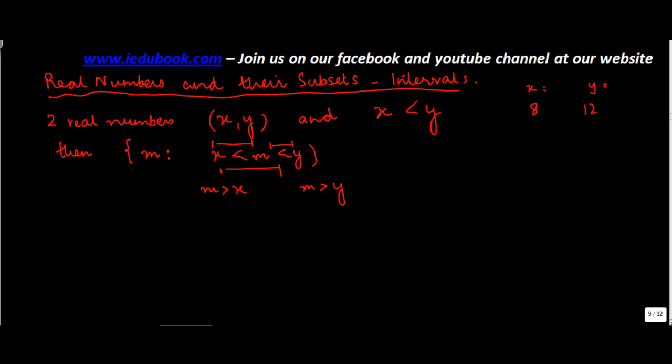So if you see here, m is greater than 8, so you can have 9, 10, 11. Can you also have 12? No, because m is less than 12. So when you denote these numbers, these are called the open interval.